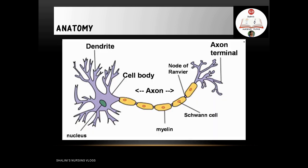Before we move ahead with the pathological changes seen after ingestion of an organophosphorus compound, let's look at the anatomy. Here is a neuron — the cell body, nucleus, dendrites, the axon, and the axon terminal.